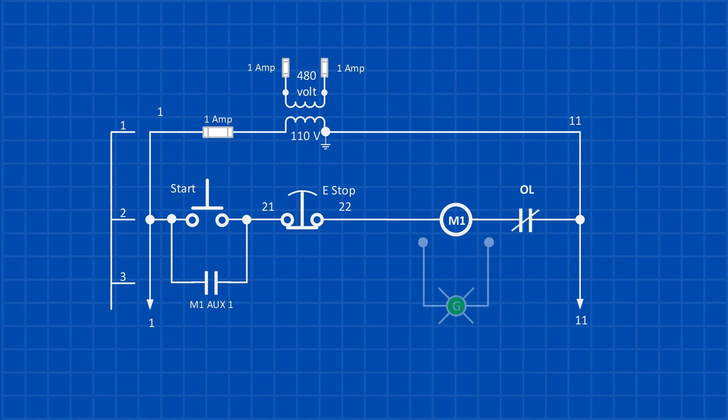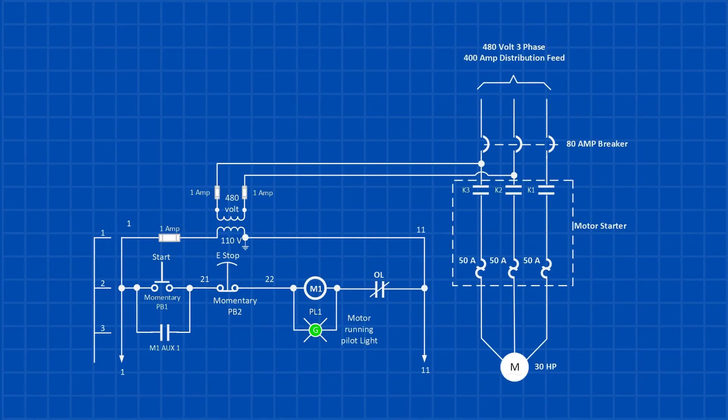Now, if you want a pilot light to show that the motor is running, you can connect it in parallel with the motor starter coil. Let's take a look at the entire motor circuit. Notice that the step-down control transformer is connected to two legs of the 480 volt supply.